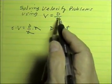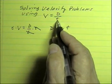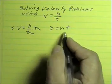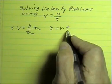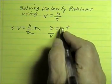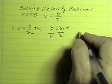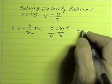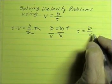On the other hand, if you know the displacement and the velocity, you should be able to solve this equation for time, and we do it basically the same way. We start out with the displacement equation, and we can isolate time by dividing each side by velocity. Velocity factors out, and we wind up with a new equation that says time is equal to displacement divided by velocity.